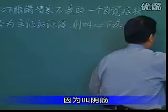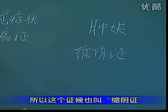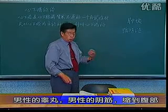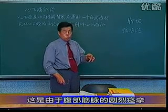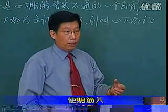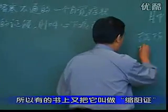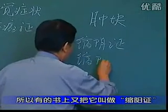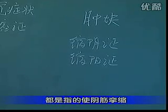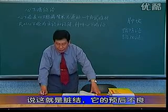因为叫阴筋缩入，所以这个症候也叫缩阴症。因为这种病症多见于男性，男性的睾丸、男性的阴筋缩入到腹部，这是由于腹部经脉的剧烈痉挛给牵引进去的，所以叫痛引少腹、入阴筋，是阴筋缩入。而男性的外生殖器又叫阳具，所以有的书上又把它叫做缩阳症。缩阳症也罢，缩阴症也罢，都是指的使阴筋缩入。此名脏结死，说这就是脏结，预后不良。